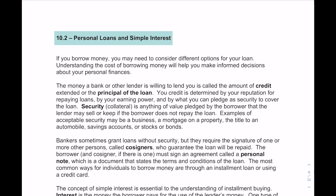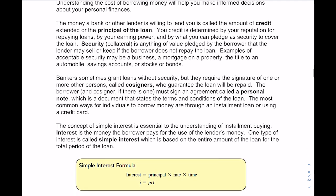Typically your credit is determined by a bunch of different factors — one of them is your reputation for repaying loans, your earning power, and what you can pledge as security to cover the loan. That can include a mortgage on a property, title to an automobile, savings account, stocks, or bonds. Collateral is anything of value pledged by the borrower that the lender may sell or keep if you don't repay the loan. Bankers sometimes grant loans without security, but that usually requires the signature of one or more co-signers, who guarantee the loan will be repaid.